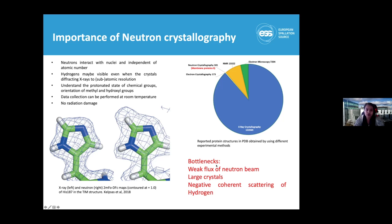There are also a few bottlenecks with neutron crystallography. Firstly, the weak flux of the neutron beam, due to which the problem comes of growing very large crystals. And of course, this is a major problem with membrane proteins because we always have issues of having enough protein to even go for x-ray crystallography.